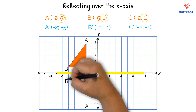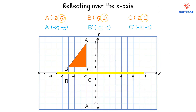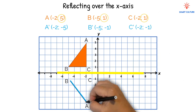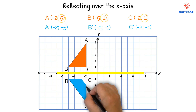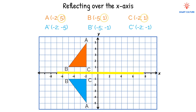Let's plot those points, and now we can draw our triangle that is reflected over the x-axis. Always remember, whenever you reflect an image over the x-axis, the x-value will remain unchanged and the y-value will become its opposite.